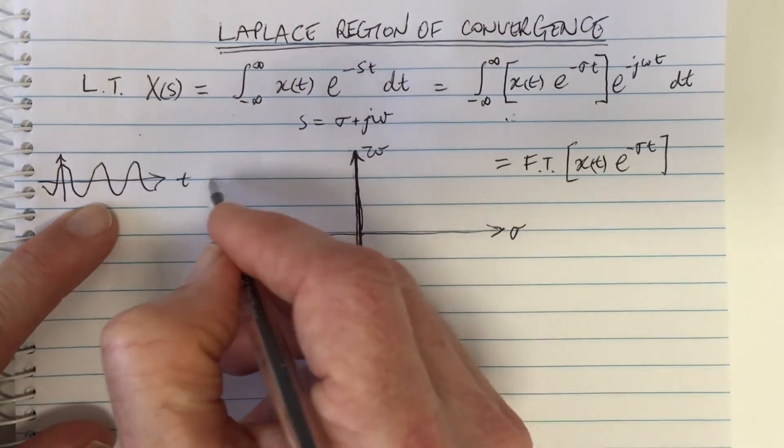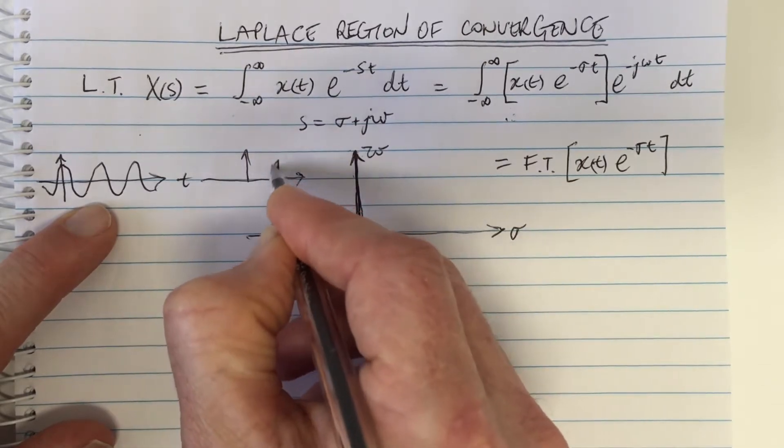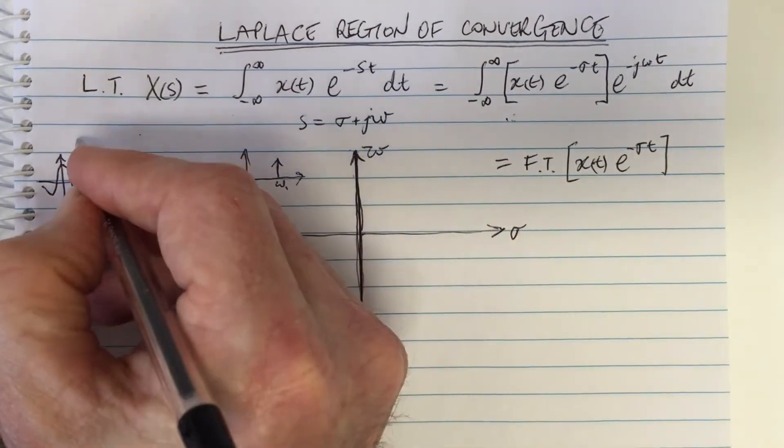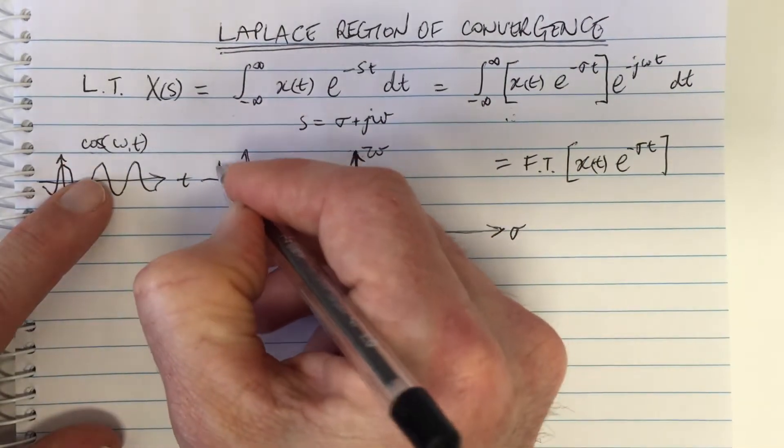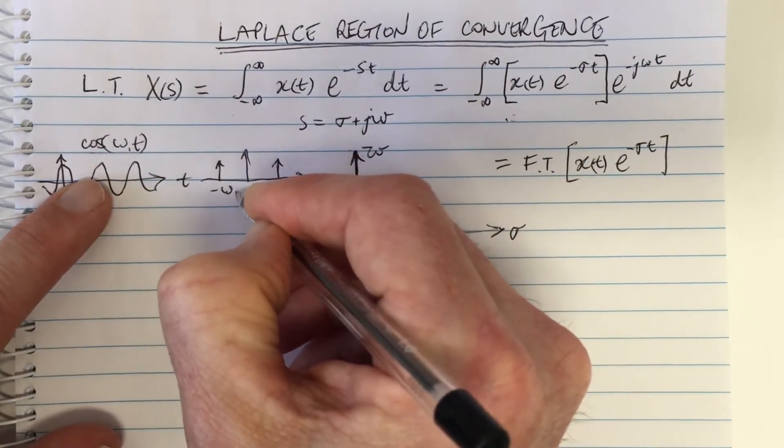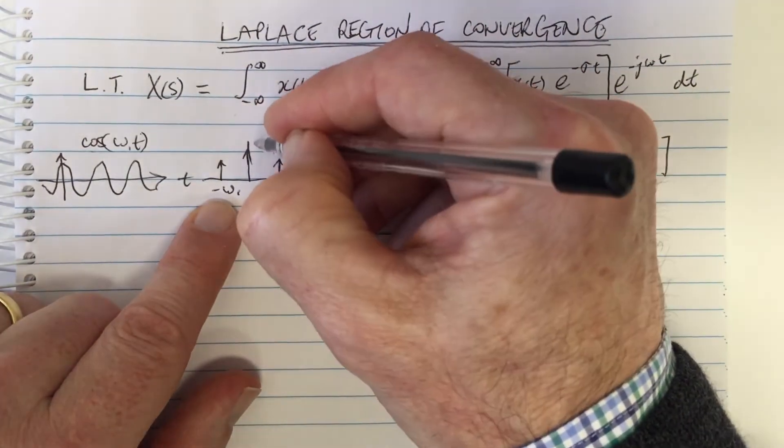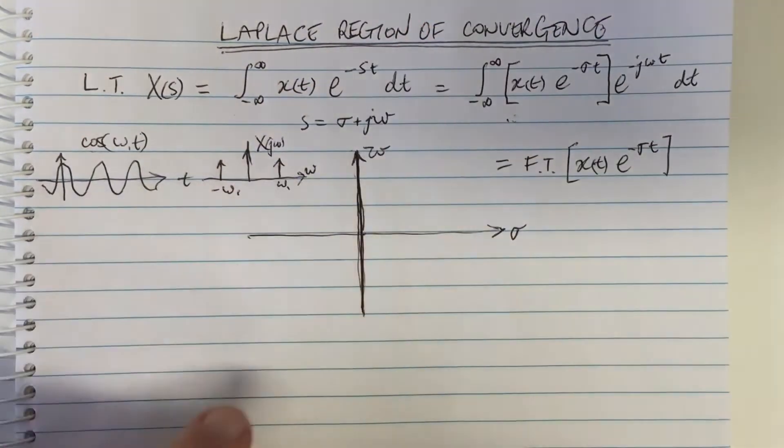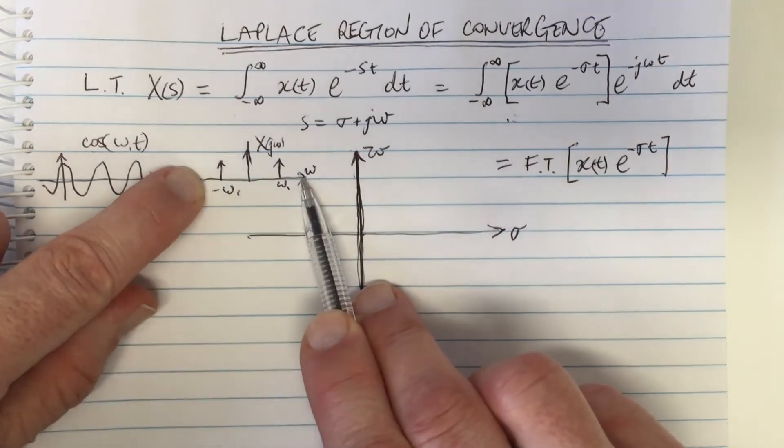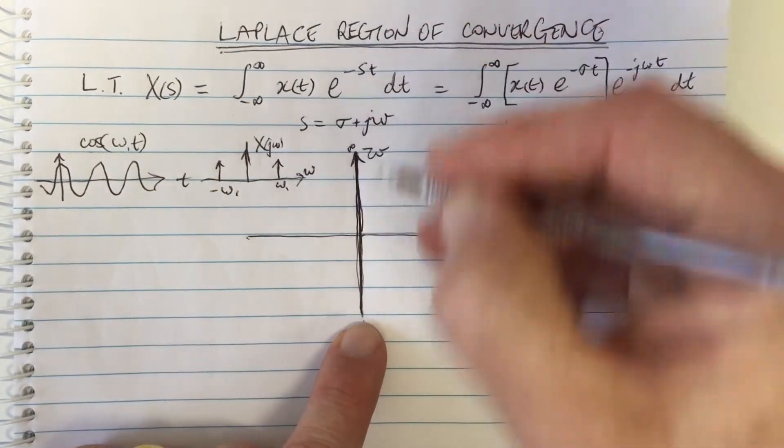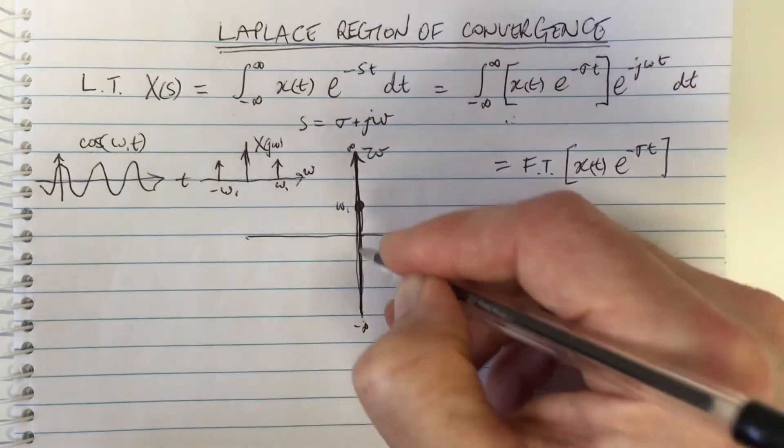So we know that the Fourier transform of a cos waveform is two delta functions, one at omega 1 if the cos waveform, if this is cos omega 1 t, if that's the time domain function, then in the frequency domain it's two delta functions, one at omega 1 and the other at minus omega 1. This is x(j omega). So on this plane here, this axis along here is this axis along here. This is plus infinity, this is minus infinity, so there will be a delta function here at omega 1 and another delta function at minus omega 1.